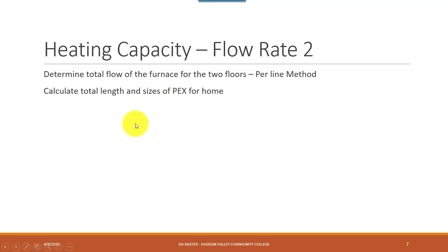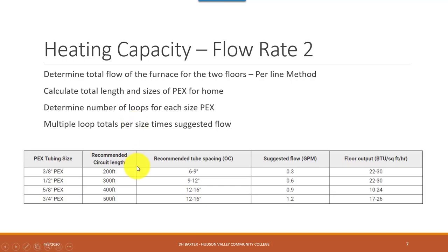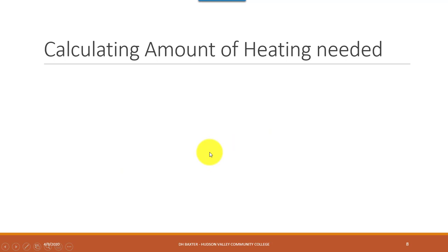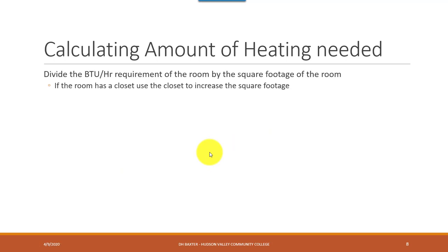The other trick is the per-loop method. You calculate the total length and sizes of the PEX for the home — say you're using half-inch for almost all of it — and you determine the total number of loops, then multiply by 0.6 GPM. It'll come out close, maybe a little higher or lower. This is a more accurate approach but takes longer, and it'll be close to the bulk method. The bulk method gets you in the ballpark quickly; this fine-tunes that answer.